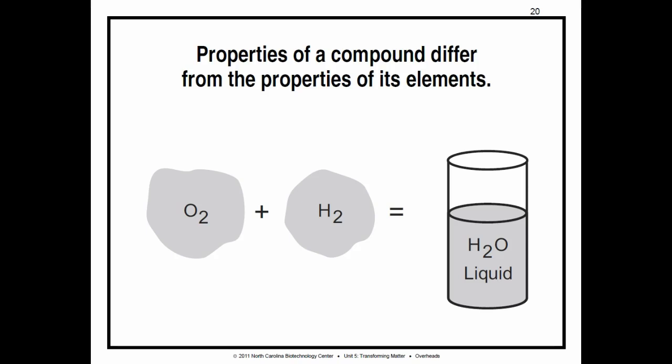Page 41. Properties of compounds. Like elements, different chemical compounds have different physical and chemical properties that depend on the atoms they're made of. Properties of a compound differ from the properties of its elements. For example, water is made of two gases, oxygen and hydrogen.